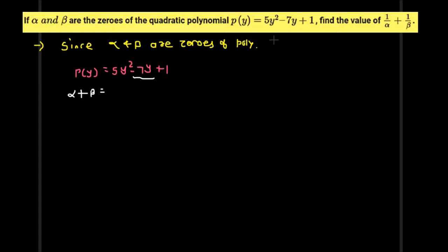Since alpha and beta are the zeros of the polynomial, we can use the sum and product of zeros.